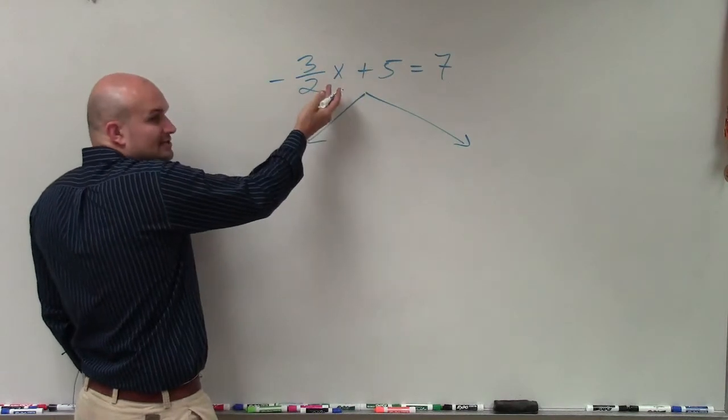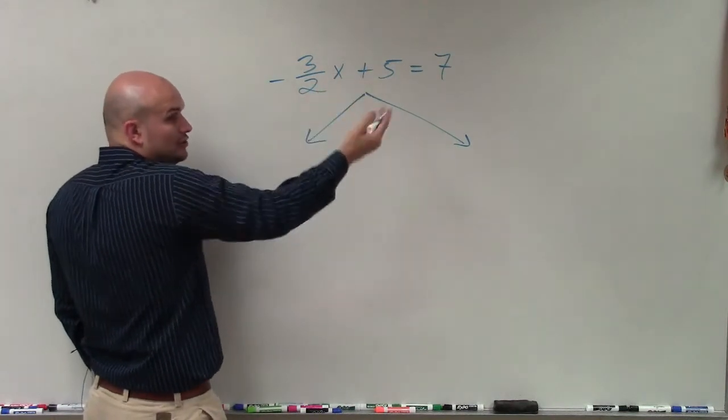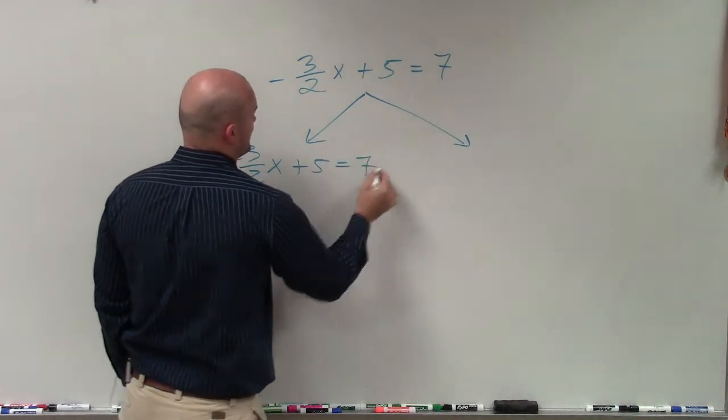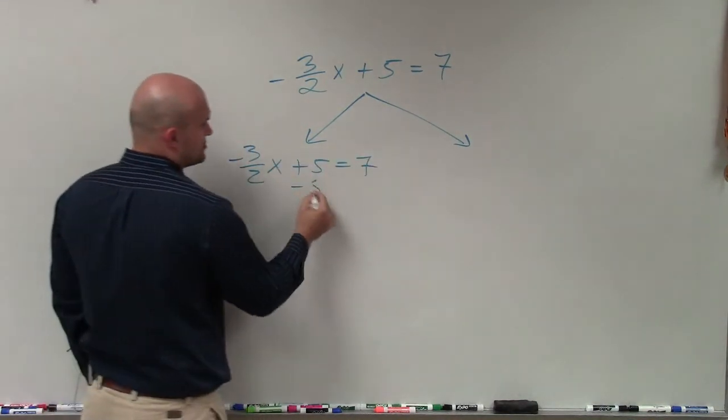We know this is a two-step equation. You always undo addition and subtraction first. So I have -3½x plus 5 equals 7. Well, I'm adding 5 to my x, so I'll subtract 5.